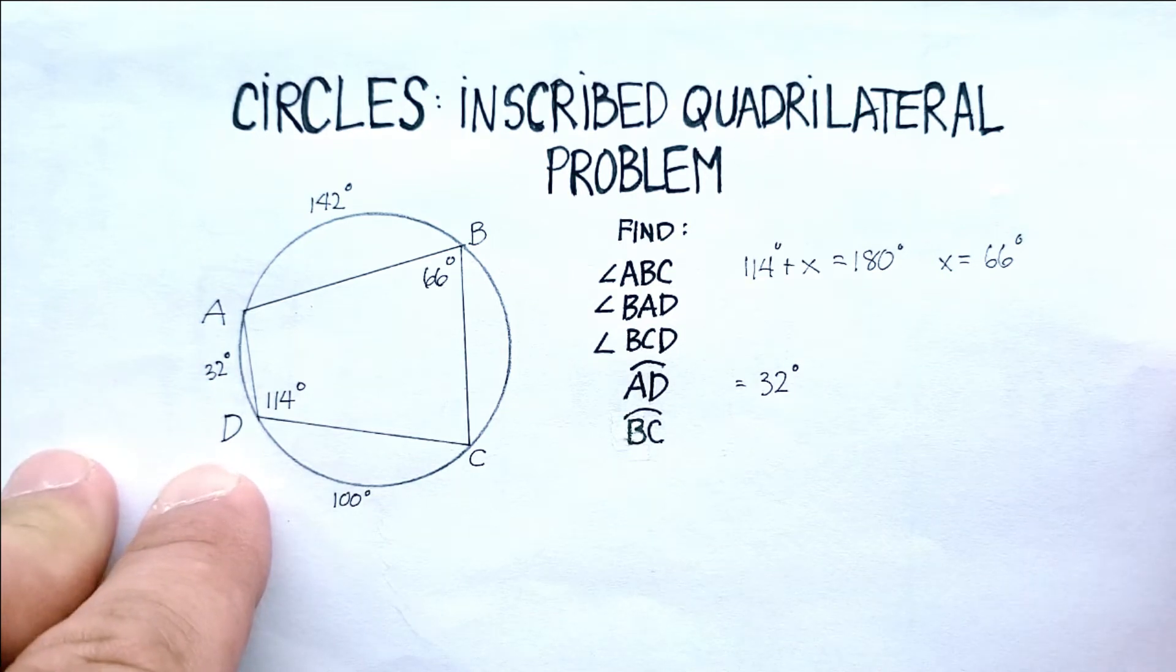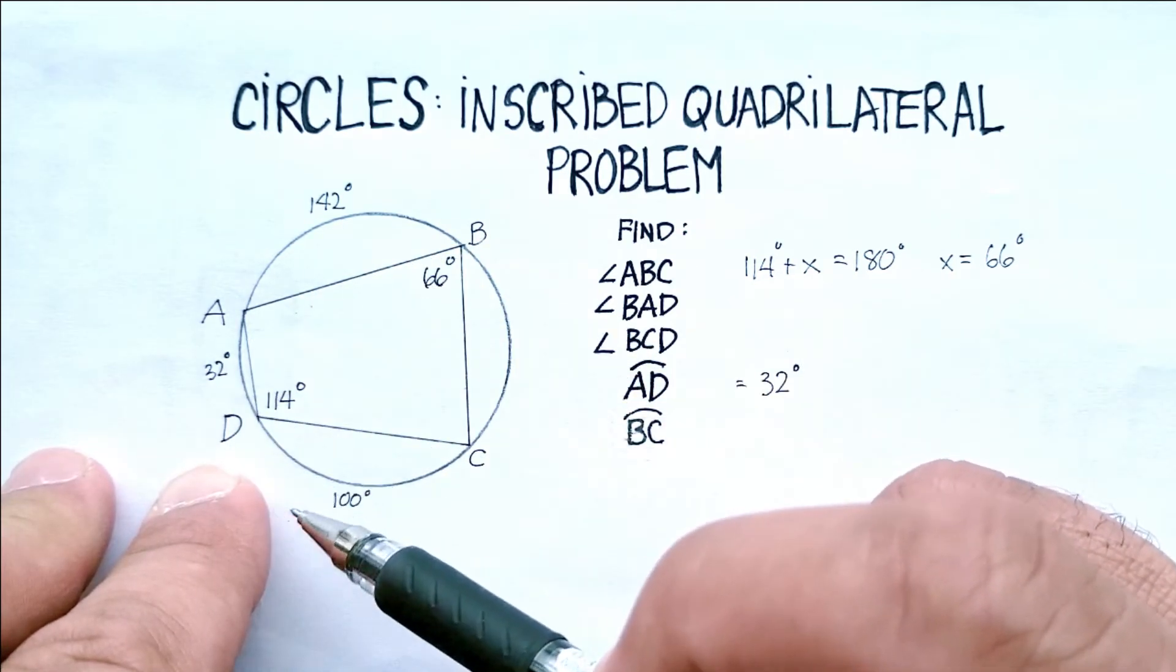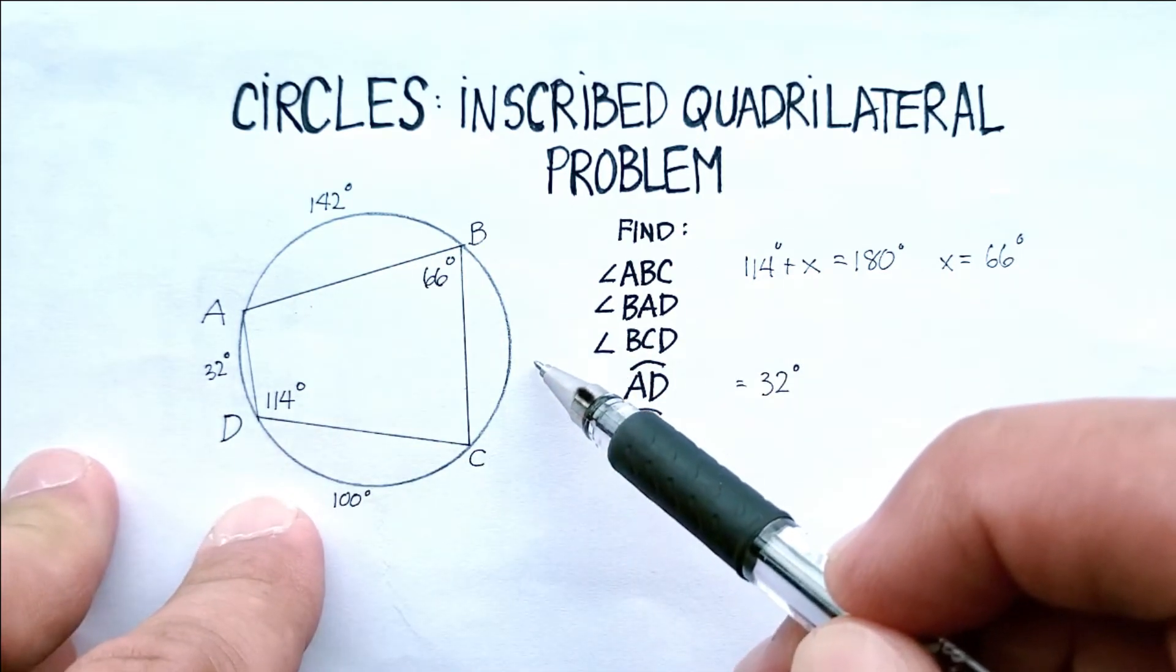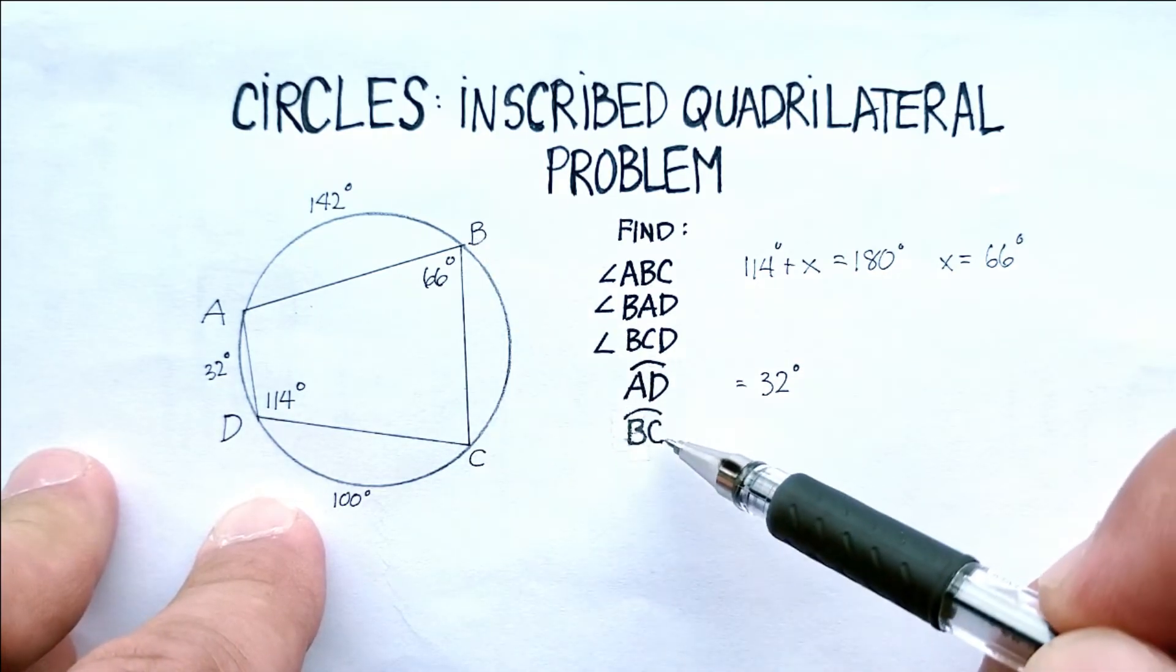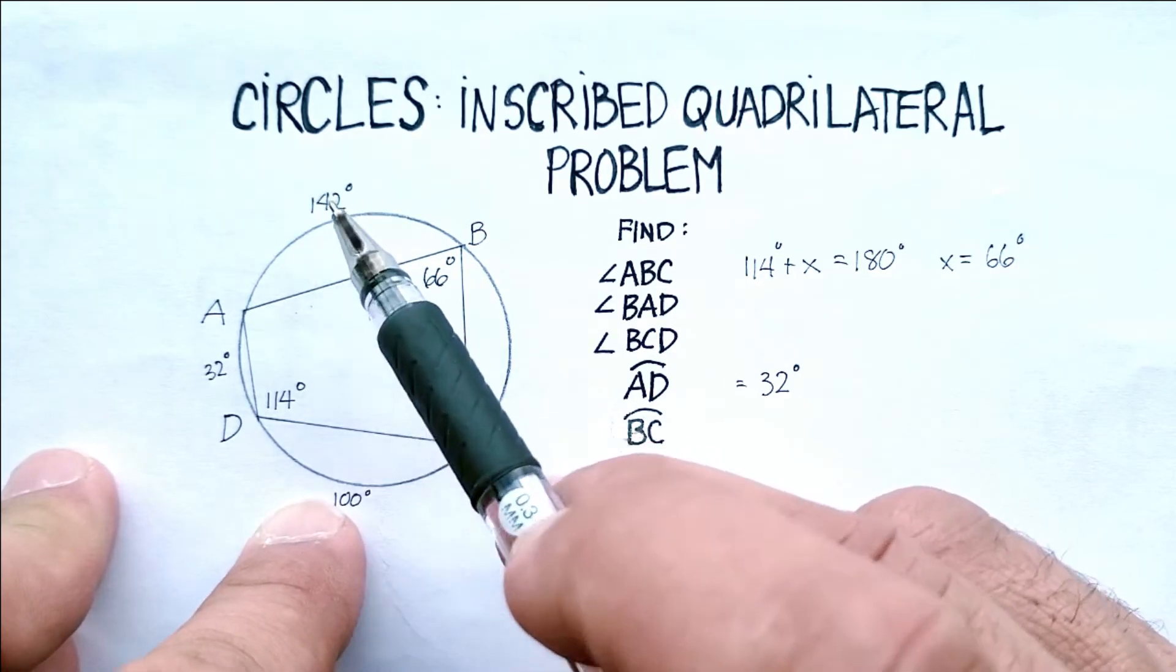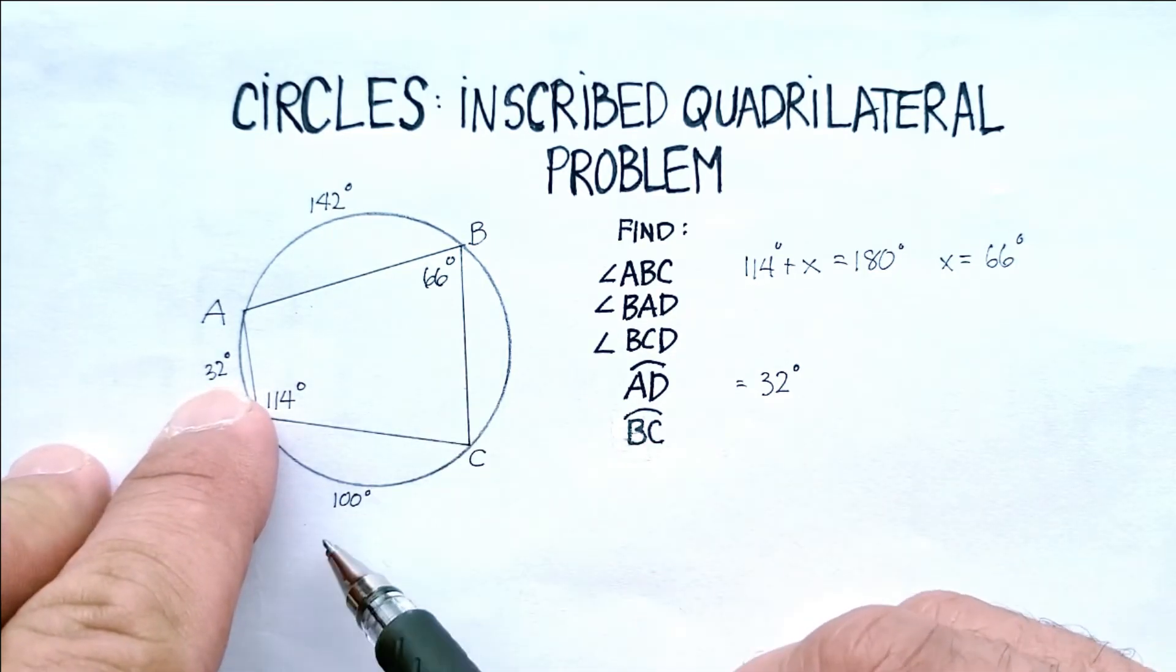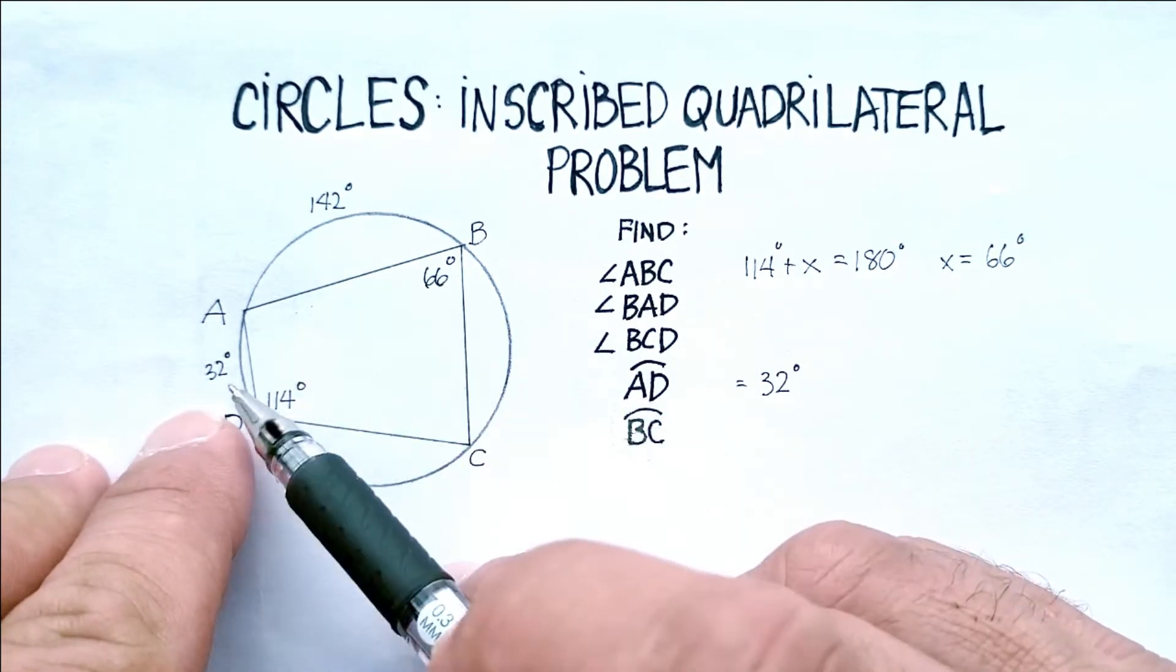We can go a couple ways now. We also know that the circumference of a whole circle is 360 degrees, and we're missing only one part, arc BC, which is another thing that we need to find. So we'll add up 142 plus 32 plus 100.